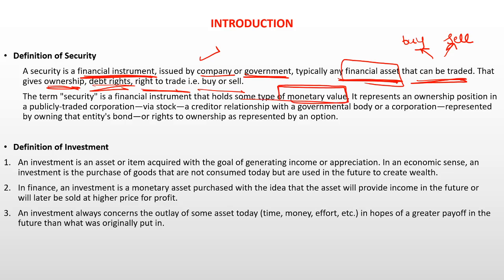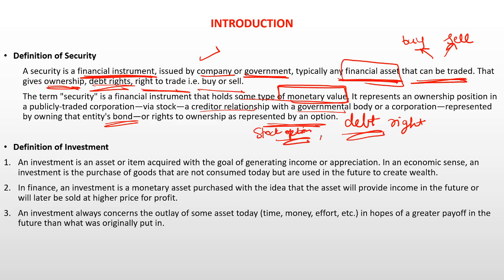The term security is a financial instrument that holds some type of monetary value. It represents an ownership position in a publicly traded corporation via stock, or a creditor relationship with a government, which we call debt — for example, a bond — or a right to ownership as represented by an option. An option is like a right to buy or sell — call, put, etc.